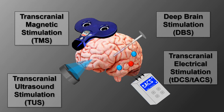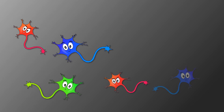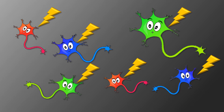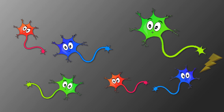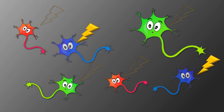One limitation that all these brain stimulation methods have in common is that they stimulate a specific region that contains different types of neurons, without discriminating between those neurons. Since different neuron types have different functions, wouldn't it be great if we could stimulate a specific set of neurons? This is now possible by using optogenetics.